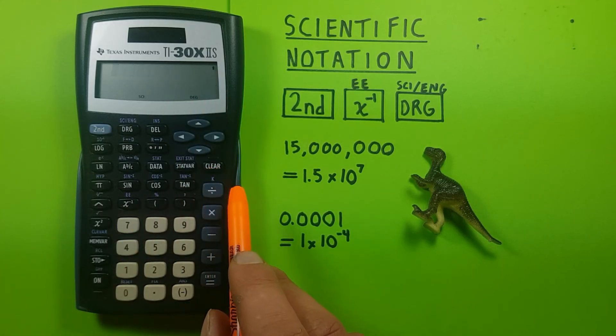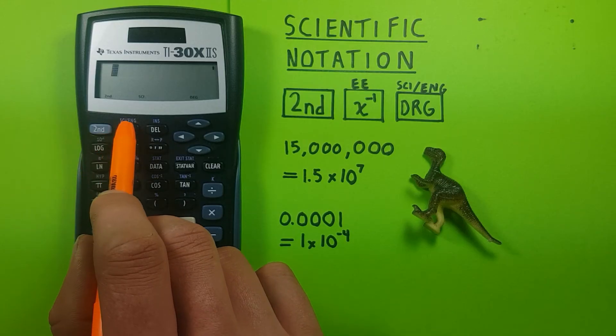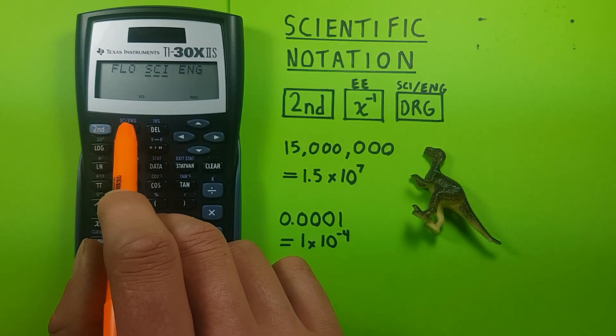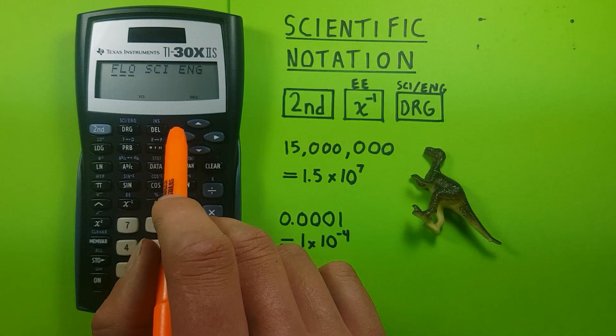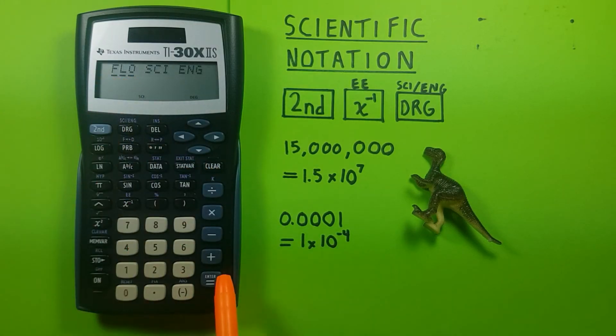When we're done using this, we want to remember to put our calculator back in floating notation, or normal notation mode. So we go second function, DRG, go back to FLO, or normal notation, and hit enter.